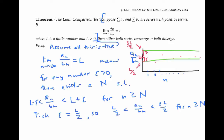Now I'm going to multiply all three sides of this inequality by b sub n. Recall that b sub n is a positive number — all the series terms are positive — so that doesn't change the direction of the inequalities at all. So we get L over two times b sub n is less than a sub n is less than three L over two times b sub n. And remember that everything here is bigger than zero, since all the a sub n's and b sub n's are positive.